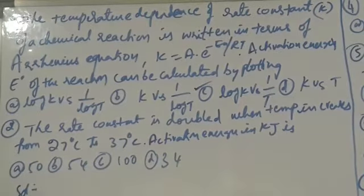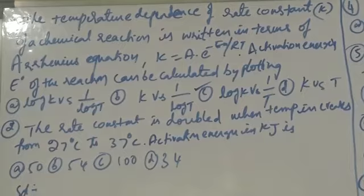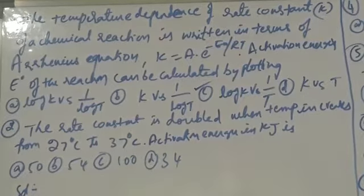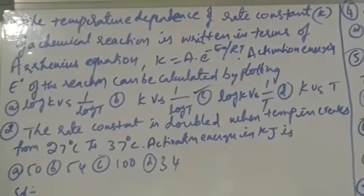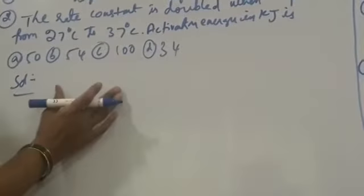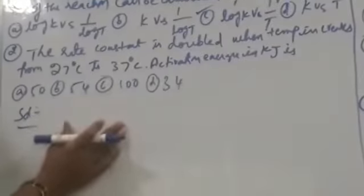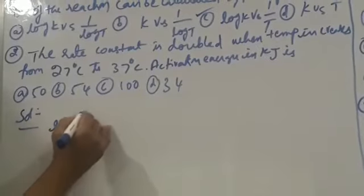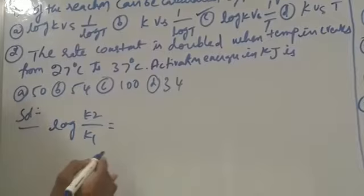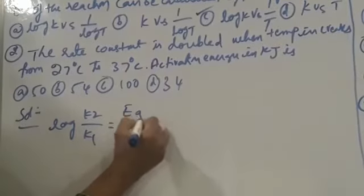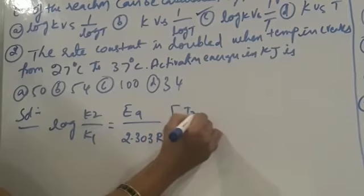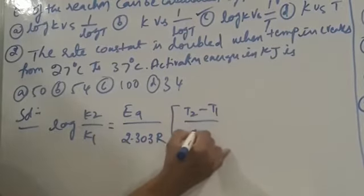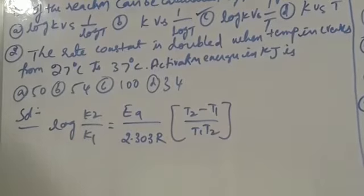Next, the rate constant is doubled when temperature increases from 27 degrees centigrade to 37 degrees centigrade. Find activation energy in kilojoules. The formula used is: log K2 by K1 is equal to Ea by 2.303R into T2 minus T1 by T1 into T2.